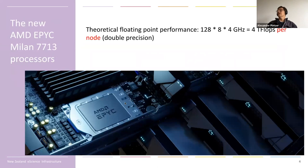The theoretical peak performance per node is about 4 teraflops — 4 double precision teraflops — because of the large number of cores.